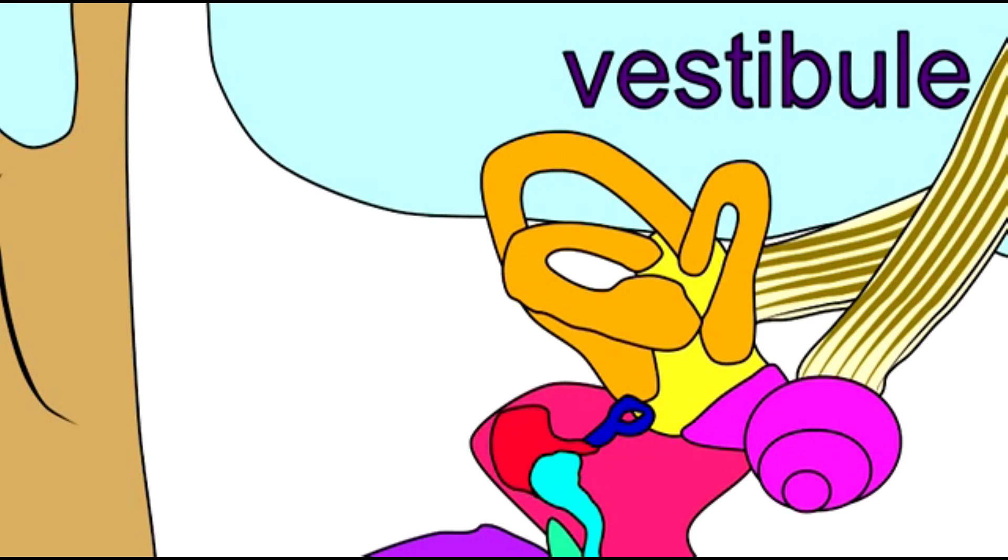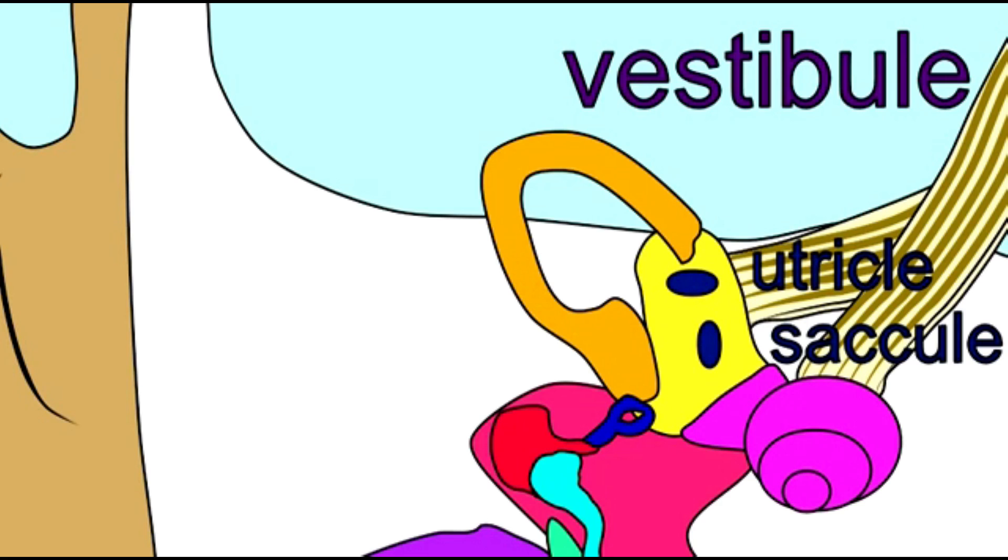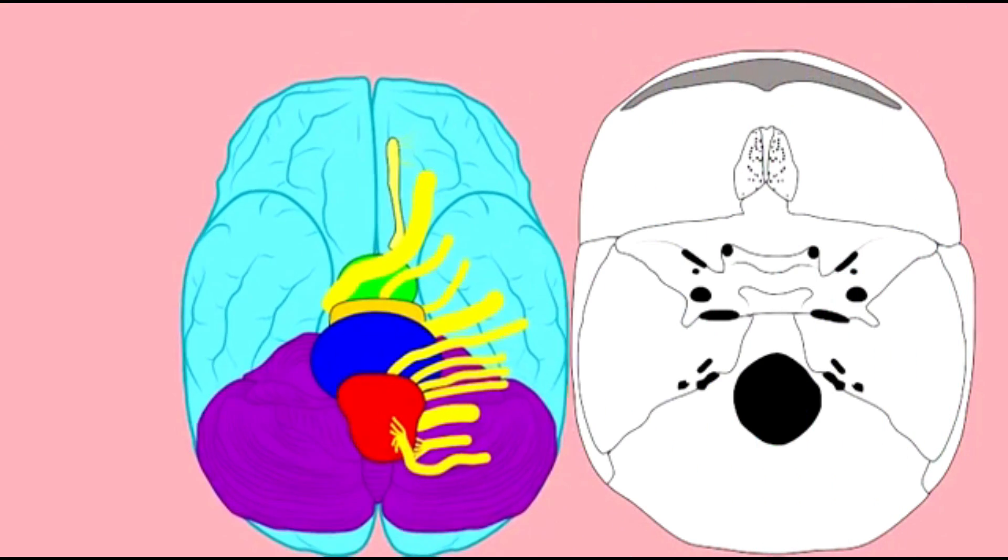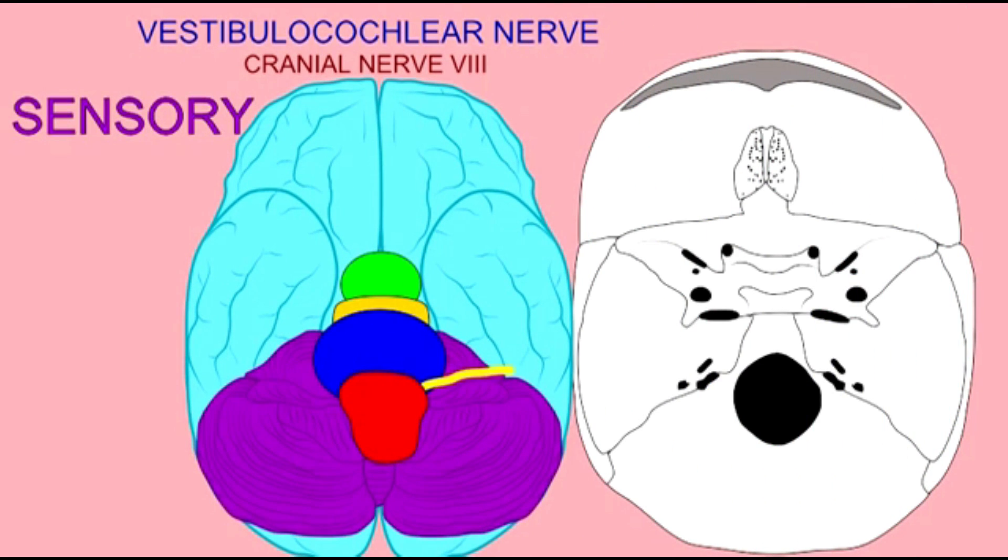In the ear, bipolar neurons synapse with the hair cells of the sensory portions of the inner ear, in the cochlea, semicircular canals, and in the vestibule. And their soma are located in ganglia.